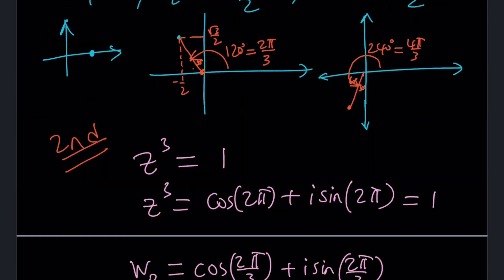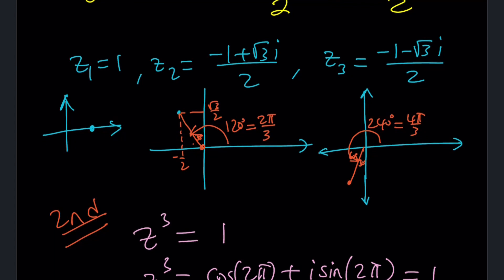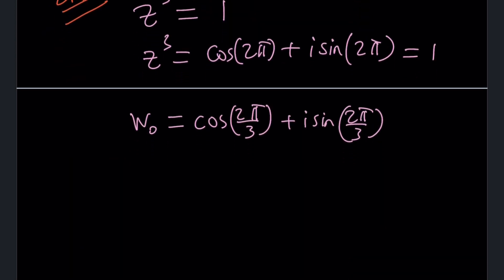Notice that when we graph these on the coordinate system, we notice two angles, 2 pi over 3 and 4 pi over 3. That's exactly what it is. And if you are wondering what that's going to look like in standard form, this is what they are. We can set them equal to that at the end. Well, this one is going to be negative 1 plus root 3i over 2.